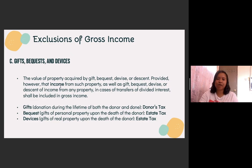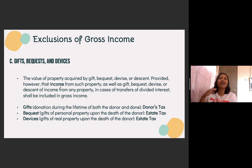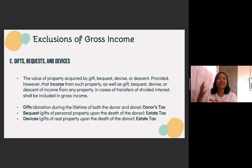The next one is gifts, bequests, and devises. The value of property acquired by gift, bequest, devise, or descent is exempted, provided, however, that income from such property — as well as gifts, bequests, devises, or descent of income from any property in cases of transfers of divided interest — shall be included in the gross income. So the meaning here is: if you receive a gift, that gift will be excluded from gross income. However, when that gift has an income out of it, it will be taxable or it will be part of the gross income.